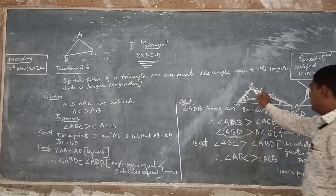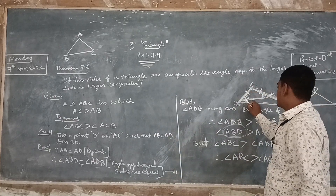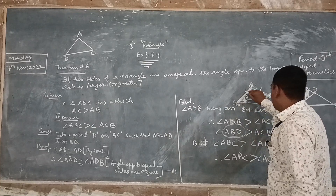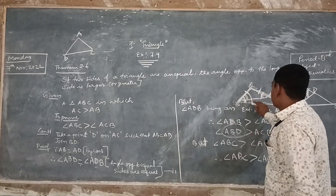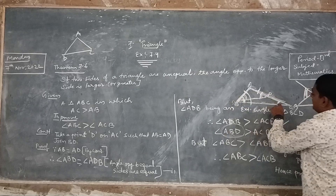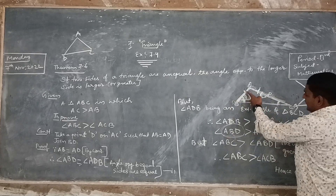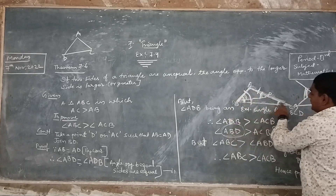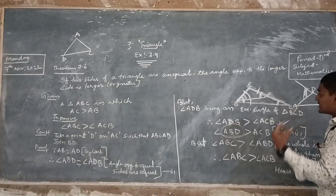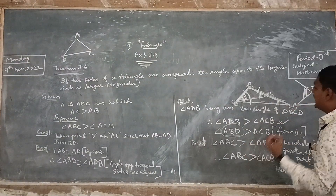Now, angle ABC is the full angle, and angle ABD is only a part of it. So obviously this larger angle ABC is also greater than ACB, because the whole is greater than a part — as we studied in one of Euclid's axioms.